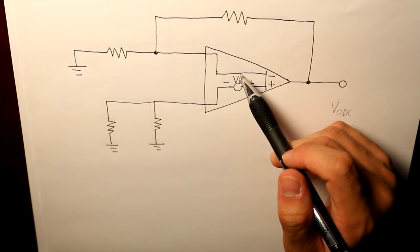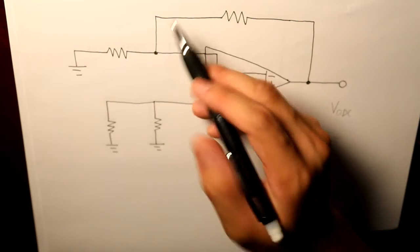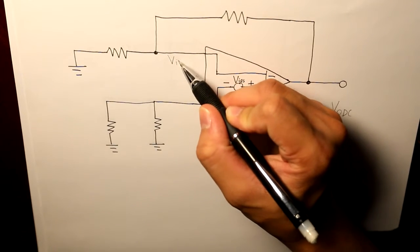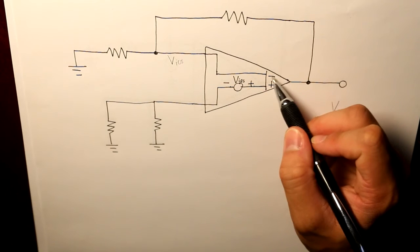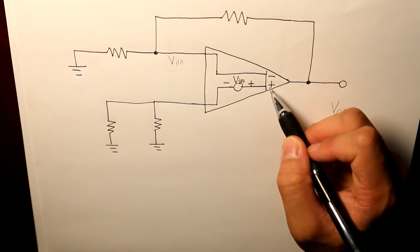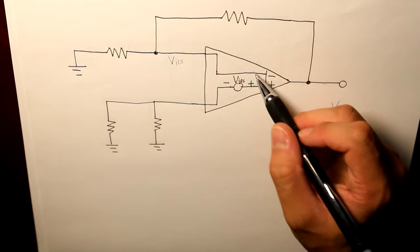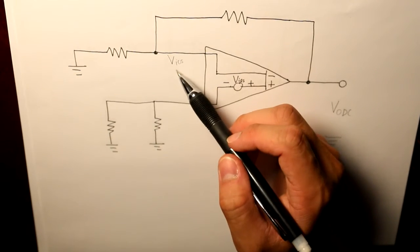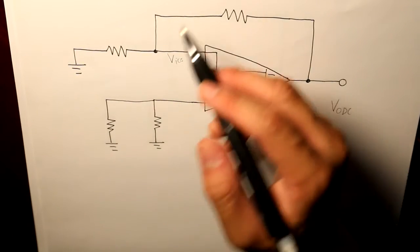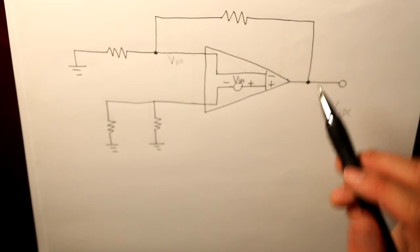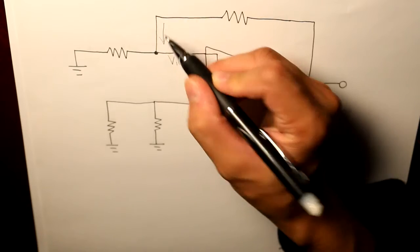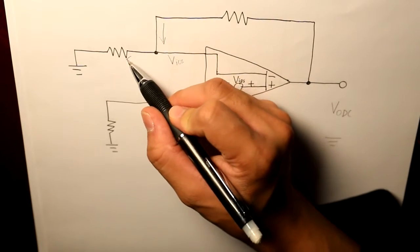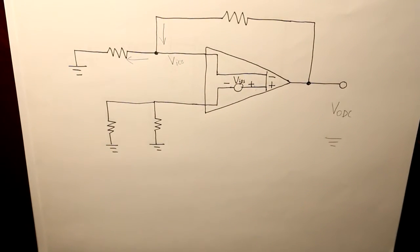And VIOS is the value that is also the same as here because this is the negative input terminal and this is the positive input terminal, and they're similar to one another. So we have VIOS here, and then there's going to be a current that's going to travel from VODC to VIOS, and then there's going to be another current traveling to the ground like this.